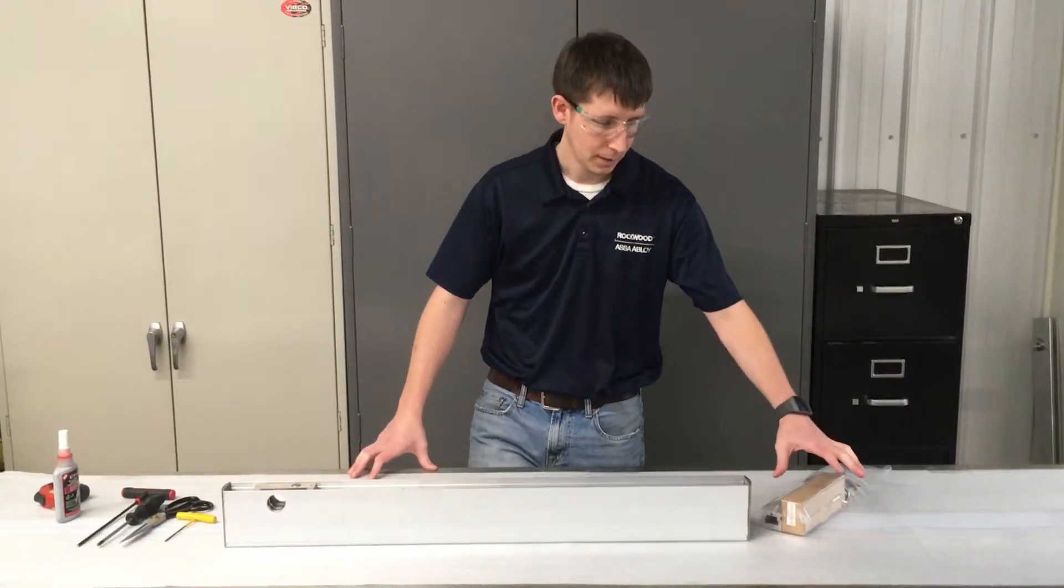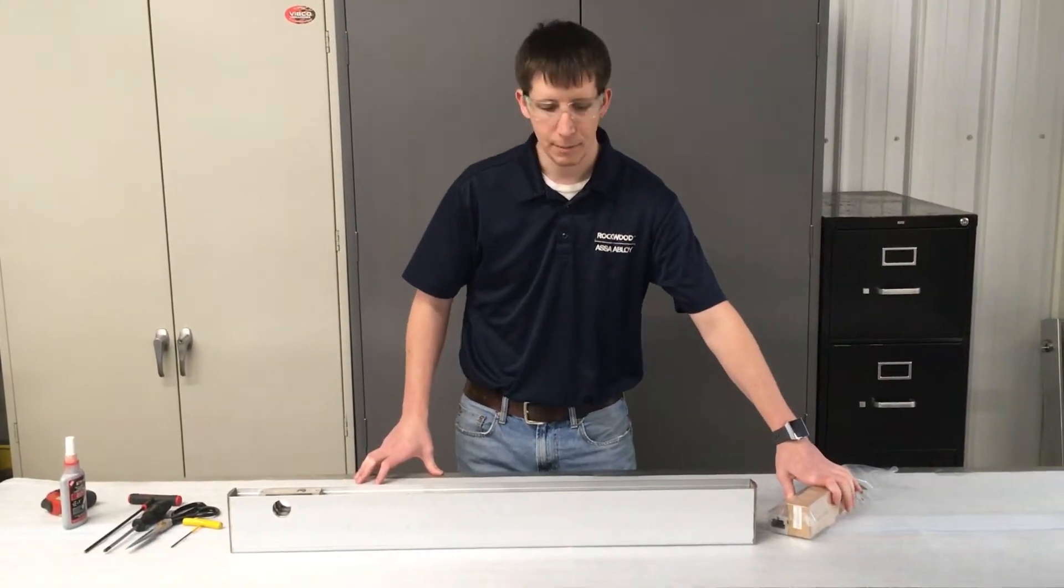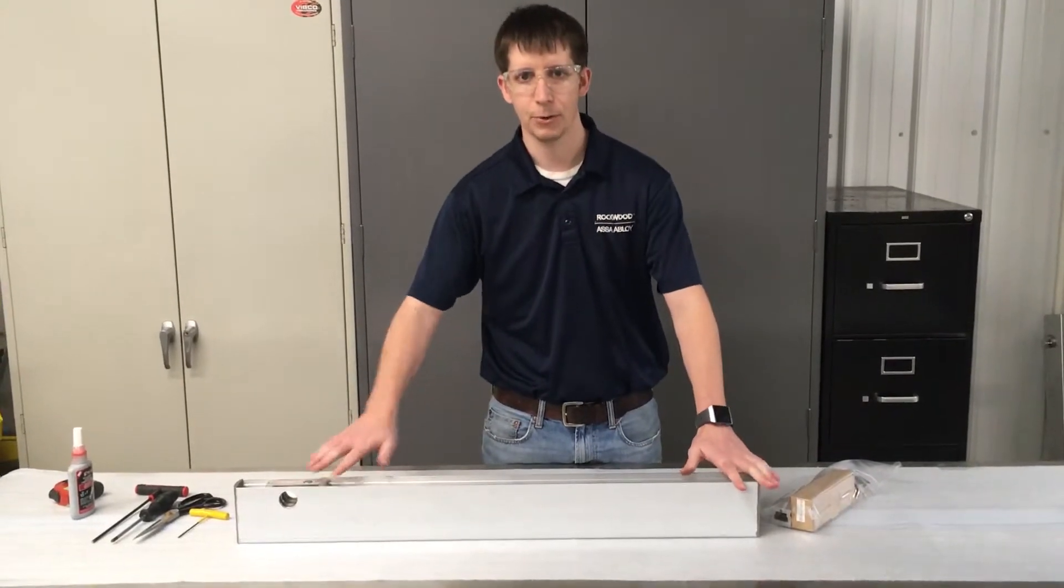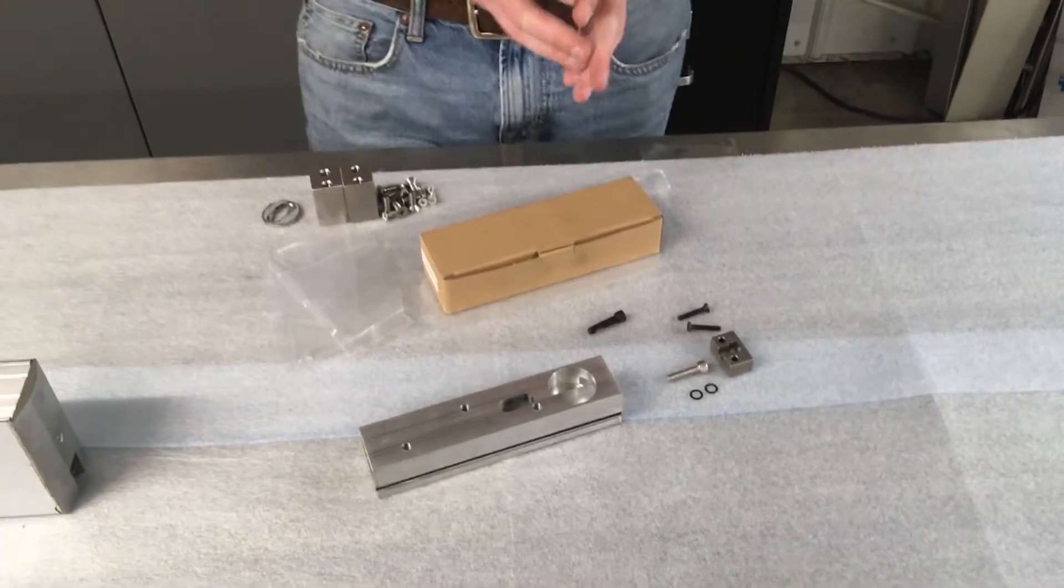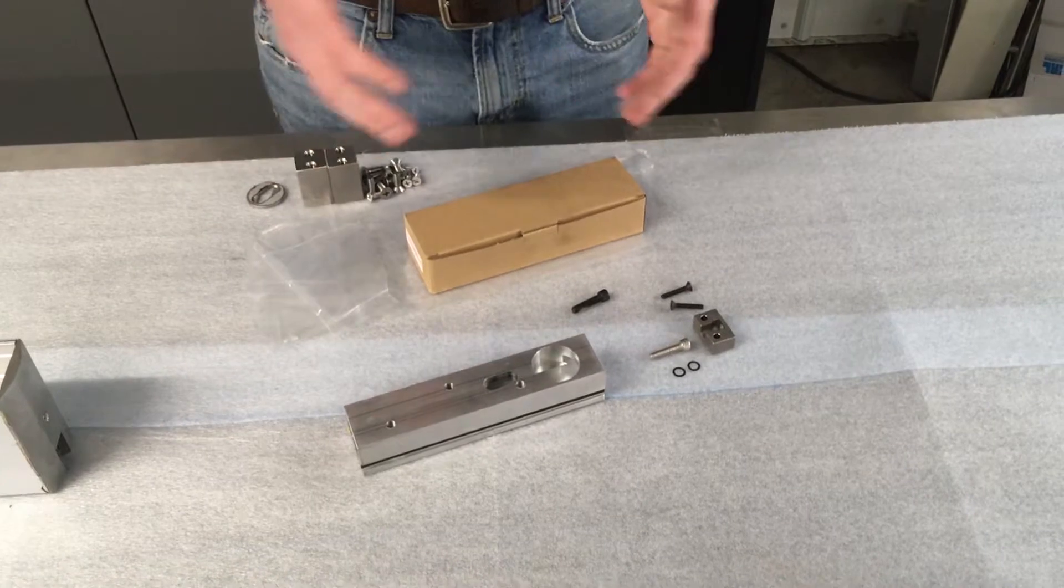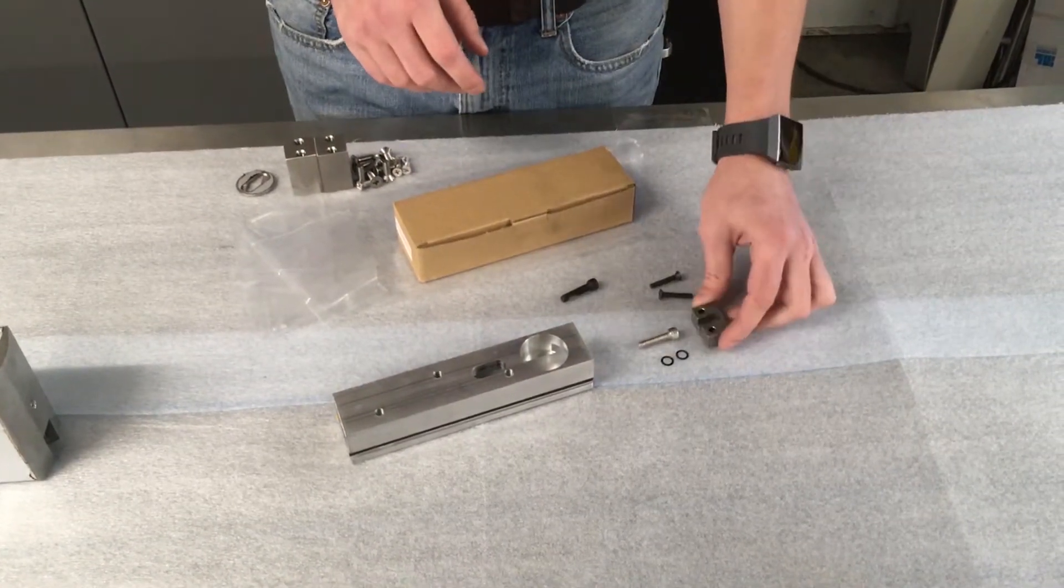Today we will be installing the walk beam kit in a four inch square door rail. Once you have opened up your walk beam kit, some of the main components are the adjuster block,